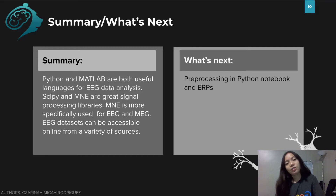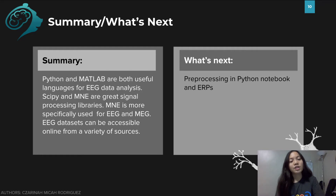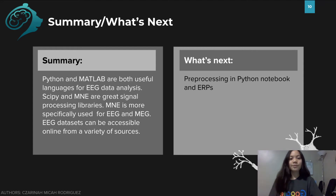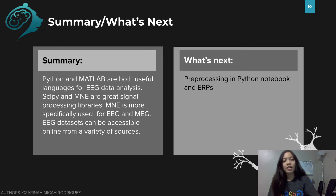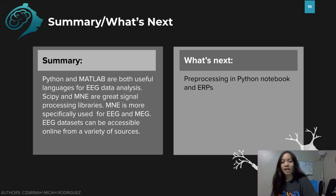To summarize: Python and MATLAB are both useful languages for EEG data analysis. SciPy and MNE are great signal processing libraries, and MNE is more specifically used for EEG and MEG. EEG datasets can be accessed online from a variety of sources. Next, you will run some pre-processing code, linked in the description below if you're not currently in the Google Colab. After running some pre-processing code, you will then look into analyzing ERPs, which I'll discuss more in the next video.